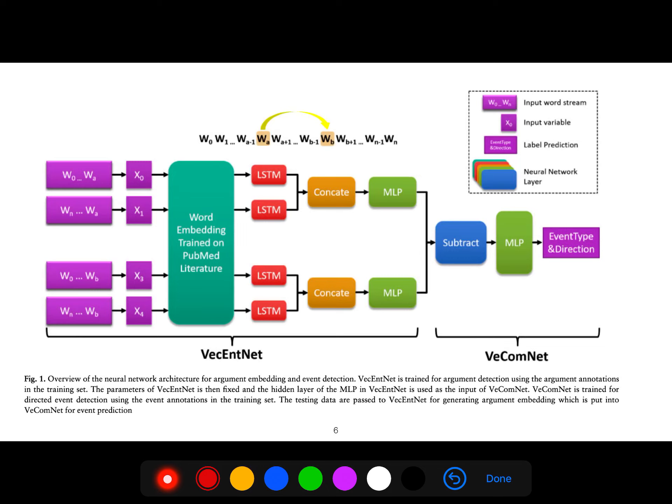And this is the overview of the neural network architecture for argument embedding and event detection. The VEC-ENT-NET is trained for directed event detection using the event annotation training set.